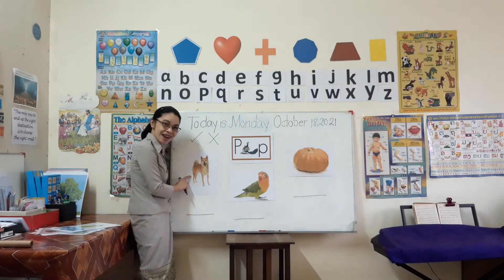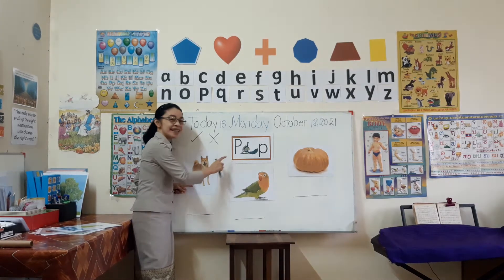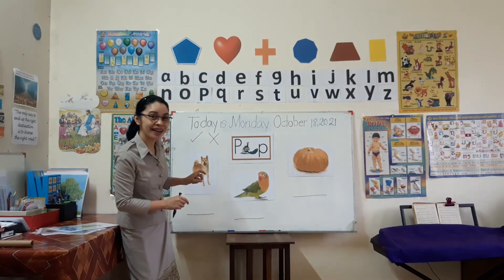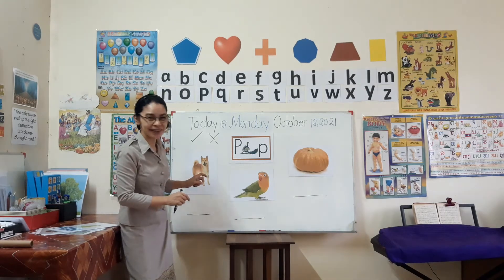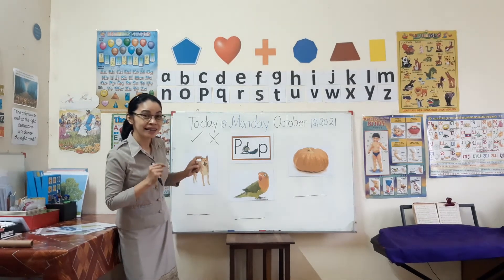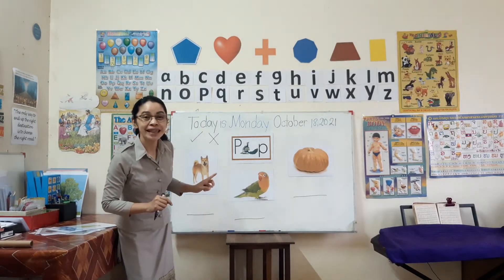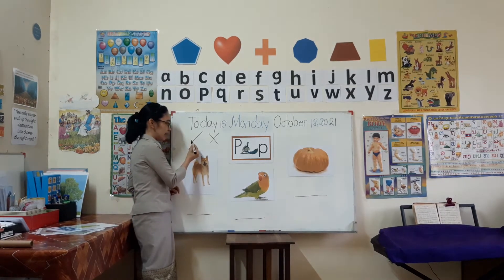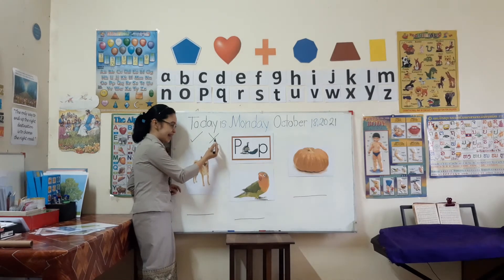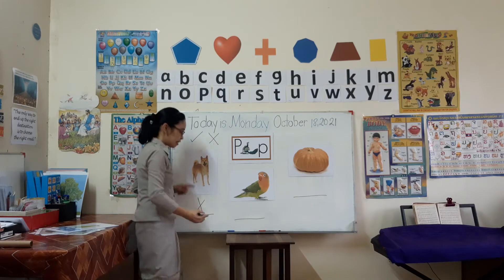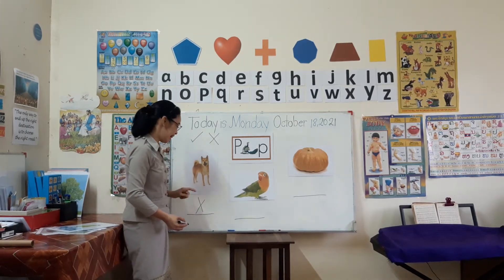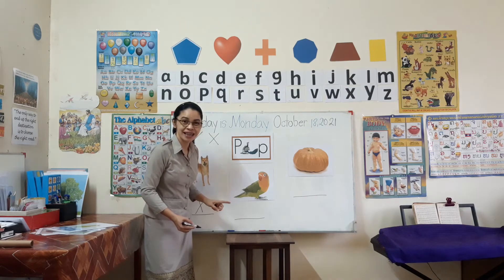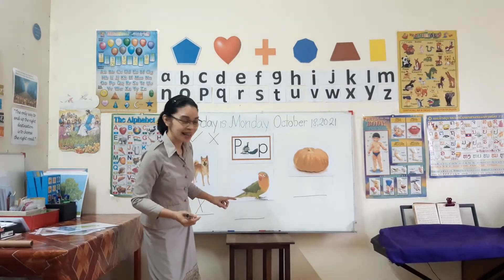For example: dog. This is a dog. Do you hear the P sound? Dog, dog, dog. No, you don't — because the first sound of dog is D. So you write the X. This one has no P sound. What about this one? This bird is called parrot. Say it with me: parrot. Do you hear the P sound?